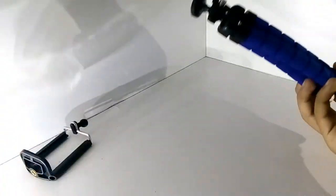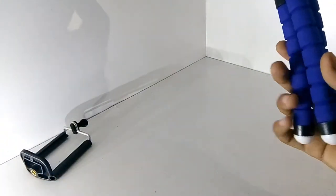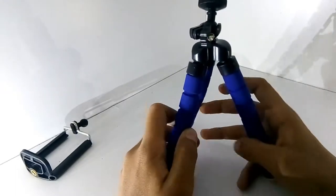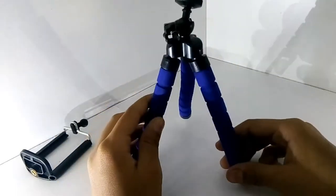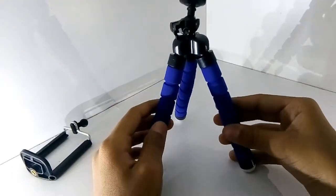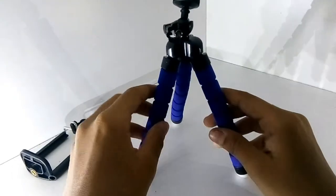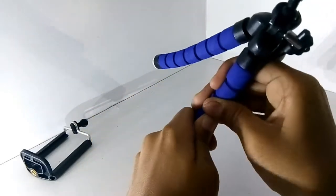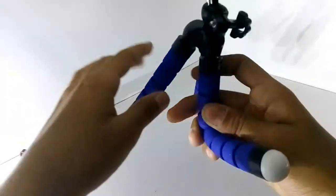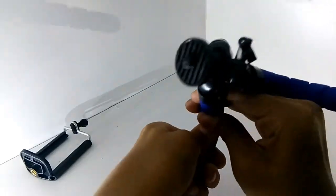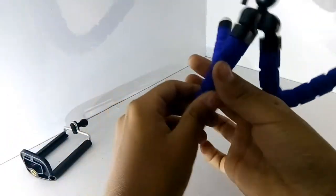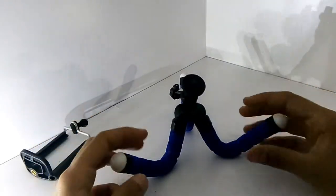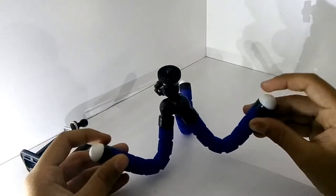So this is a 6-inch flexible tripod. You can handle it like this and you can bend it like this. I can keep it like this also, so it can bend in many ways.